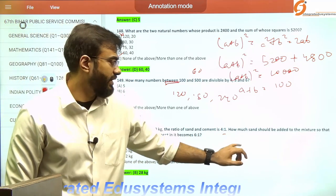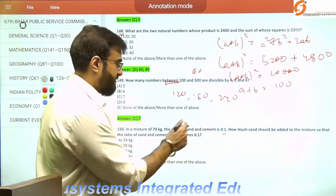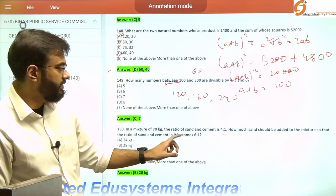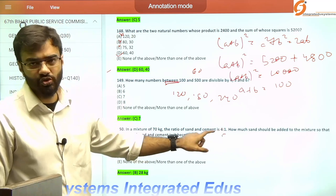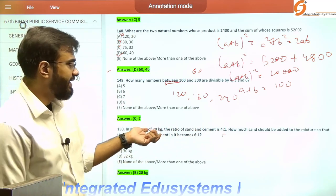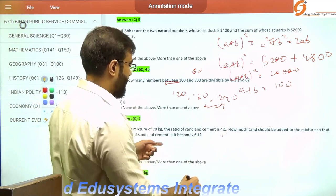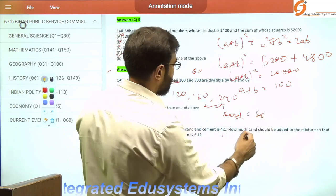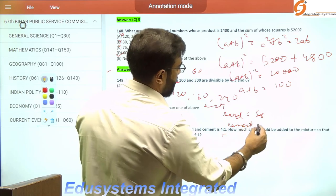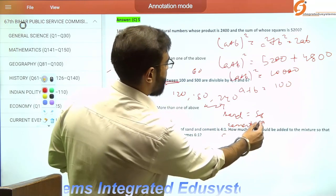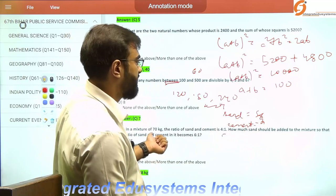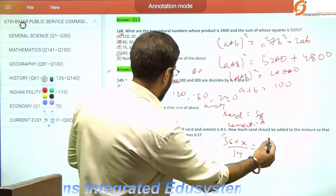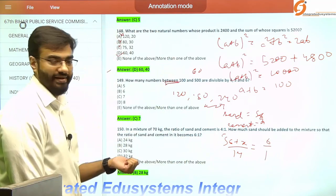In a mixture of 70 kg, the ratio of sand to cement is 4:1. Taking common ratio as x, 5x = 70, so x = 14. Sand is 56 kg, cement is 14 kg. How much sand to add for ratio 6:1? Write (56 + x)/14 = 6/1. Solving, x = 28 kg.